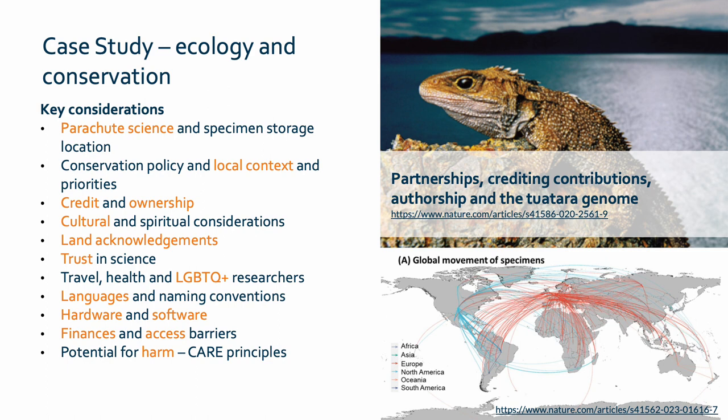Language choices and naming conventions again play a key role in ecological research. The English language may be less appropriate than local languages for naming of species, and for dissemination and storage of data it may be best to use multiple languages. Accessibility barriers such as software, hardware and finances are also key considerations when thinking about researchers in certain regions which may lack these resources. Finally, the avoidance of harm via the CARE principles is of utmost importance in this field.